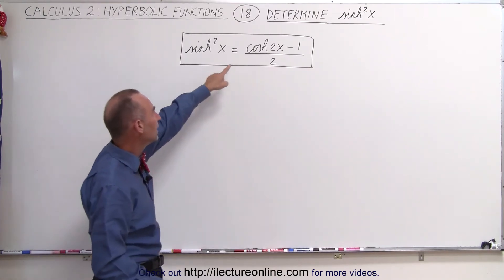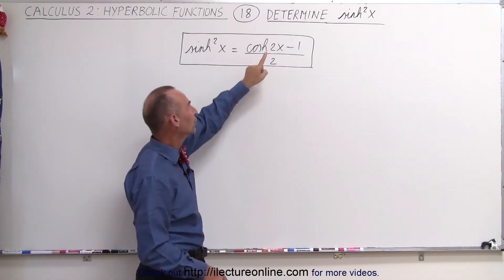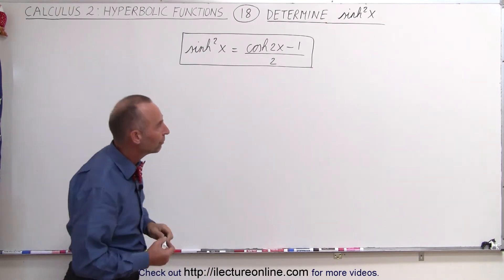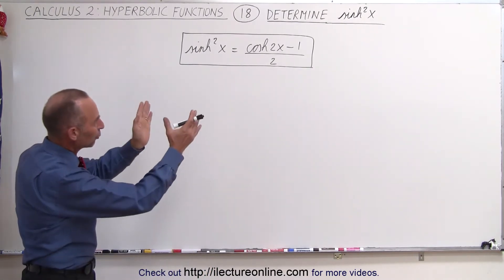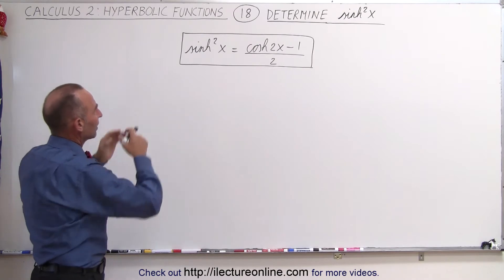So we're going to show that this is indeed equal to the hyperbolic cosine of 2x minus 1, all divided by 2. Again, we're going to work on the right side to make it look like the left side, because that's easier to do.